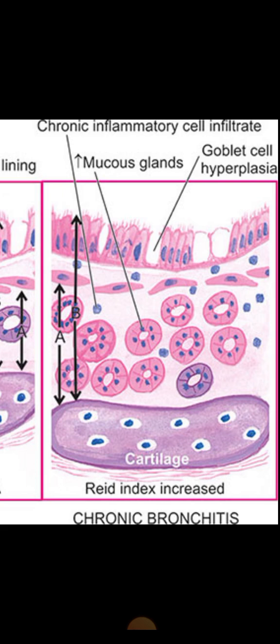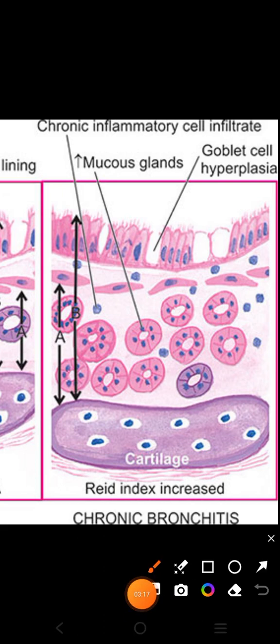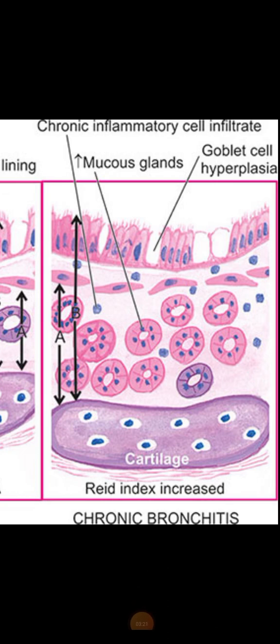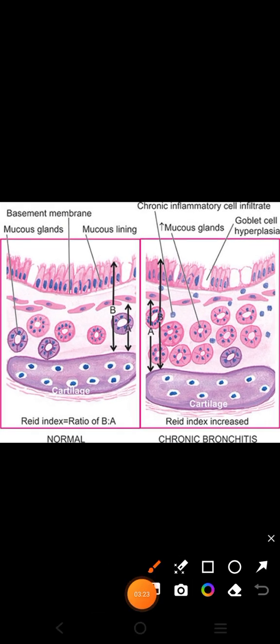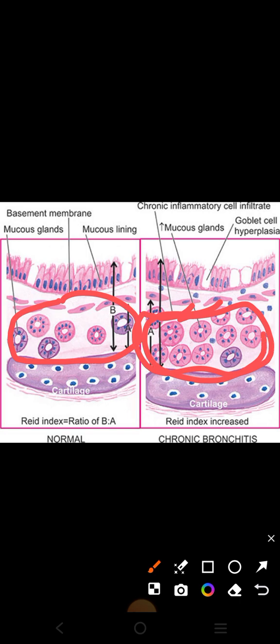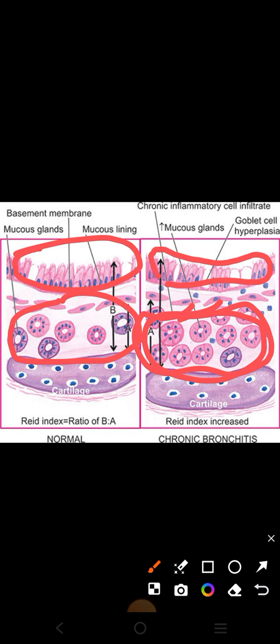In chronic bronchitis, mucosal gland hyperplasia mainly occurs and is the characteristic feature of this disease. One change is that the normal ciliated pseudostratified columnar epithelium is replaced by squamous epithelium — squamous metaplasia or dysplasia occurs. This indicates that the disease can also progress towards cancerous transformation. So feature number one is squamous metaplasia or dysplasia, and feature number two is mucosal gland hyperplasia.